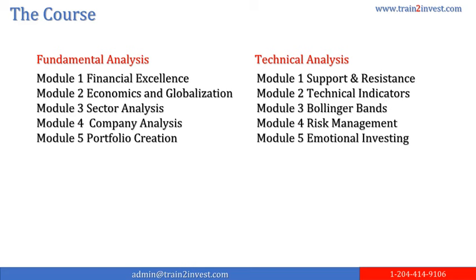Technical Analysis. Module 1: Support and Resistance — establishing a price chart and looking at trends. Module 2: Technical Indicators — using specific technical indicators to prepare entry, exit, and stop strategies. Module 3: Bollinger Bands — a special technical indicator to establish overbought and oversold positions. Module 4: Risk Management — establishing an individual's risk tolerance through a risk profile and risk temperament surveys. Module 5: Emotional Investing — managing emotions through planning a trade and trading the plan.